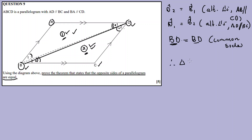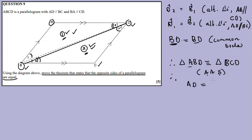Conclusion: triangle ABD is congruent to triangle BCD. We have proved congruency using angle, angle, side — AAS. Since the triangles are congruent, it means that length AD is equal to length BC, and length AB is equal to length DC. This is how you prove that the opposite sides in a parallelogram are equal.